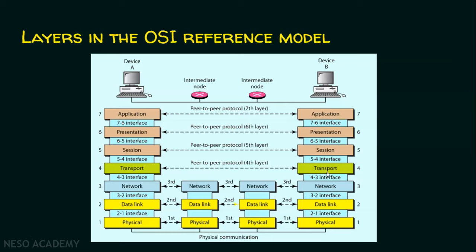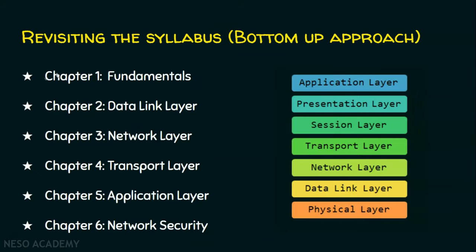Now we will see how the syllabus is framed. Chapter 1 deals with fundamentals and the physical layer. Chapter 2 deals with the data link layer. Chapter 3 deals with the network layer. Chapter 4 covers the transport layer. Chapter 5 covers the application layer — combining session, presentation, and application into a single chapter — and finally, security is discussed.